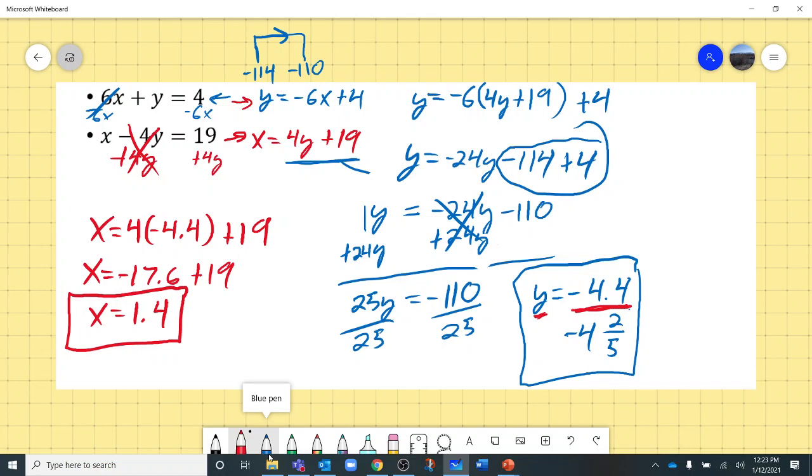And we could plug that back into either of the original equations just to make sure that it works. So let's do that. We're going to do, let's do the second equation. Actually, I think that's what we've really been doing. Let's do the second equation. So we have 1.4, because x equals 1.4, minus 4 times, actually that's what we did to get it. So let's do the other equation. Let's use the first equation. We have 6 times 1.4 plus y, and y is negative, so minus 4.4, and that should equal 4. So 6 times 1.4 is 8.4. So 8.4 minus 4.4 equals 4, and that is what we were hoping to get. So that worked. Okay, that's that one.